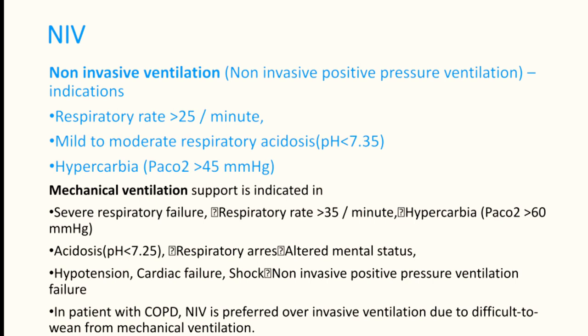Once the patient is stabilized with oxygen and nebulization, they can be shifted to the ward. If not improving, proceed to non-invasive ventilation — BiPAP. Indications for BiPAP include respiratory rate more than 25, mild to moderate respiratory acidosis with pH less than 7.35, or hypercapnia with CO2 more than 45. Avoid mechanical ventilation in COPD patients as they can become permanently ventilator-dependent and are very difficult to wean.